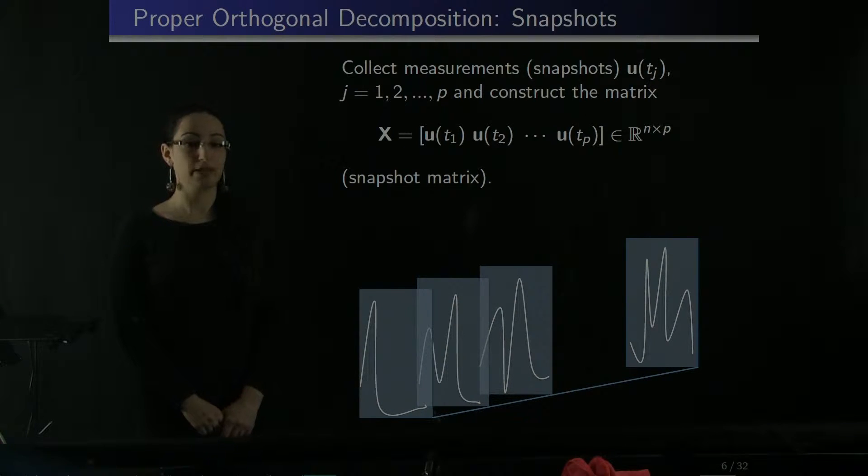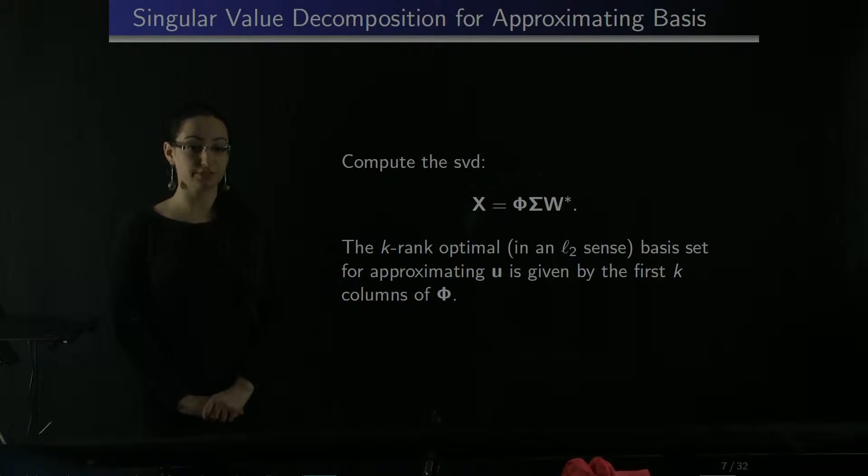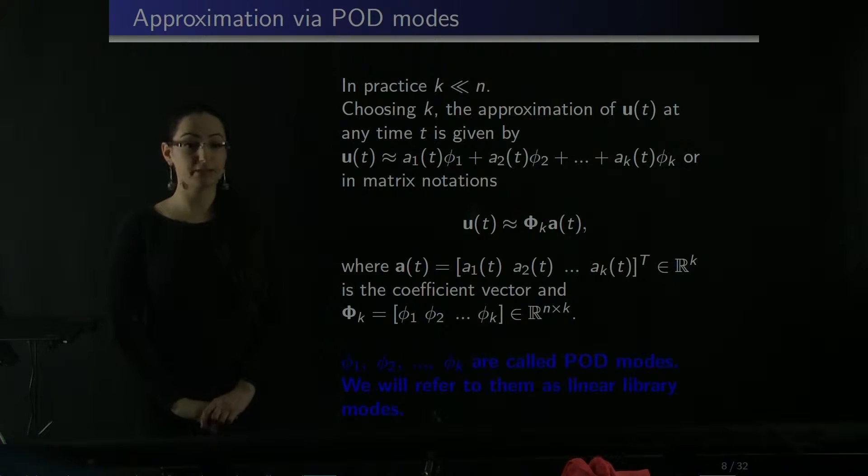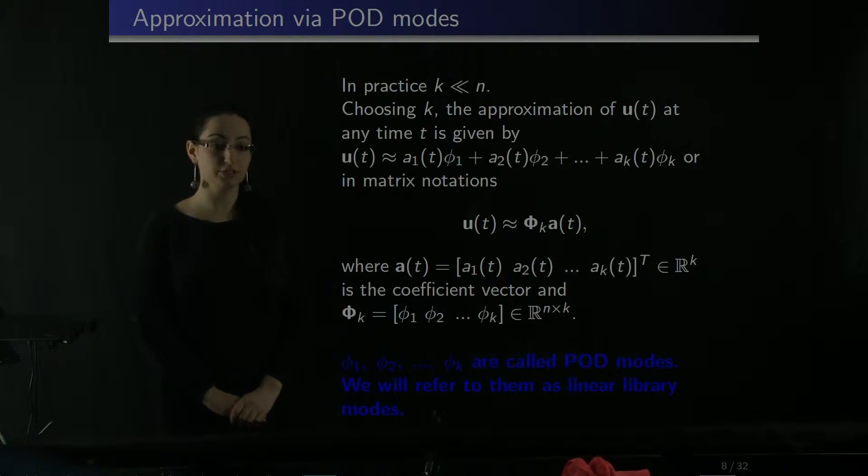How this works. We collect measurements during time and stack them into a big matrix. Then we take a singular value decomposition of the matrix. As well known, the best basis for approximating U is given by columns of matrix phi. In order to get good accuracy, we don't have to choose all the columns of phi. Instead, we can choose some criteria and pick some number k that we're going to use. Using some criteria, we pick k. In practice, this k is much smaller than n. In that case, our solution U can be represented as a linear combination of the columns of the matrix phi, or as matrix times A, where A is the coefficient vector and we aim to solve for A.